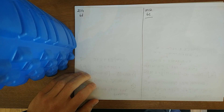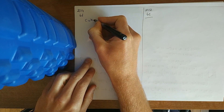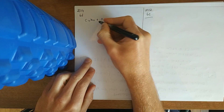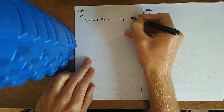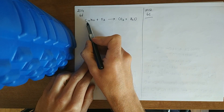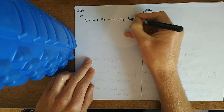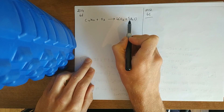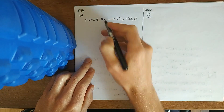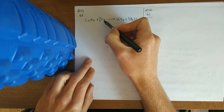Balance it up: 4 carbons on the left, stick a big 4 on the right. 10 hydrogens on the left, big 5 — 5 times 2 is 10. You always deal with the one you've got more of, so we've got more oxygens here. 8 and 5 is 13, we've got 2 of them, so if we need 13 just go 13 over 2 — that's 6 and a half times 2, which is 13.